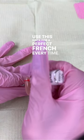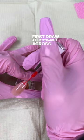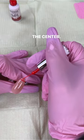Use this hack for a perfect French every time. First, draw a line straight across and then draw a line up to the side.